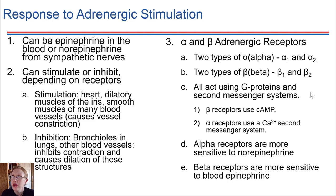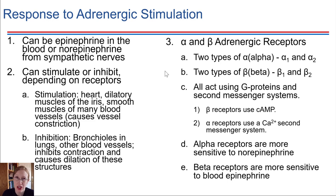So what is the end result going to be in the effector cell? It depends on which specific receptor has been activated. Binding of an adrenergic receptor can either lead to stimulation or inhibition — it just depends on the particulars of the cell that we are talking about.